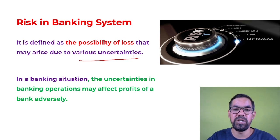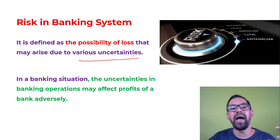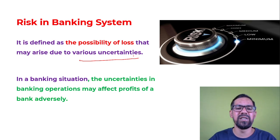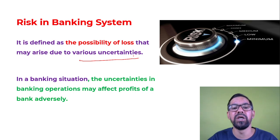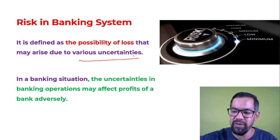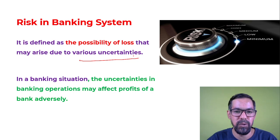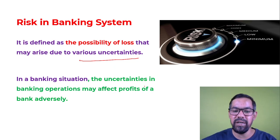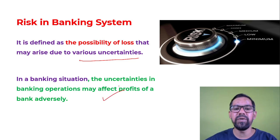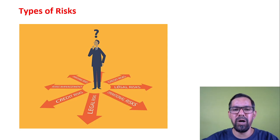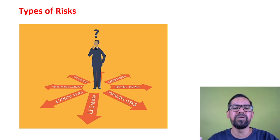In banking, if there is some problem with operations, the bank will incur losses. For example, if employees go on strike, or there is a system failure, or high inflation in the economy, or some changes made by RBI — these are different causes for losses. These uncertainties are generally part of risk. In a banking situation, uncertainties in banking operations may adversely affect a bank's profit.